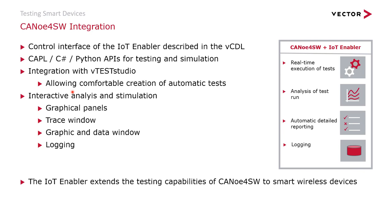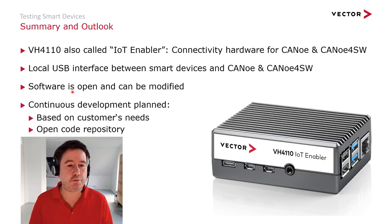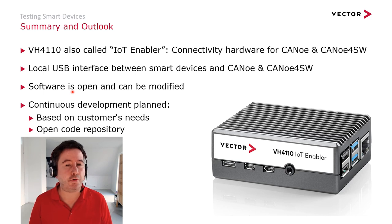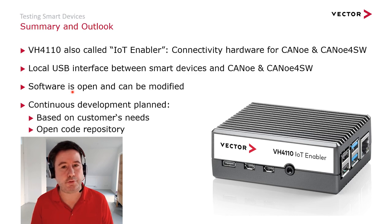The IoT Enabler extends the testing capabilities of Canoo for software to smart and wireless devices. To summarize: the IoT Enabler is the connectivity hardware for Canoo and Canoo for software to test wireless devices and sensors, attached via a normal USB connection. The software running on the IoT Enabler is open and can be modified. We are planning to extend it to further protocols upon customer requests and to provide an open code repository, for example on GitHub. In the next session, I will show a demonstration where a smart device is tested using the IoT Enabler and Canoo for software.